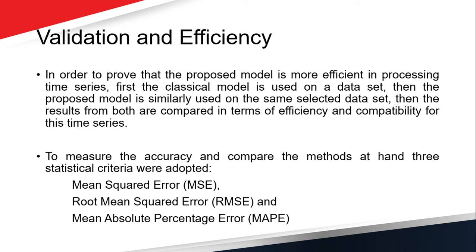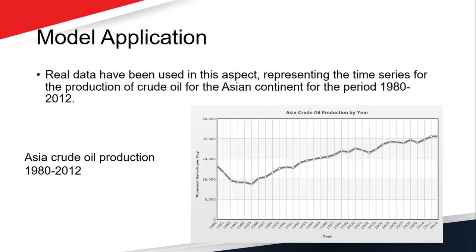To measure accuracy and compare the methods, three criteria were adopted: the mean squared error (MSE), the RMSE, and the mean absolute percentage error (MAPE), which were calculated to get the accuracy level. The data used represents the time series for the production of food oil for the period 1980 to 2012.